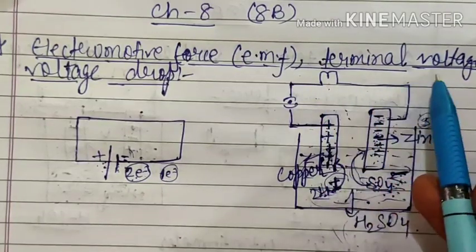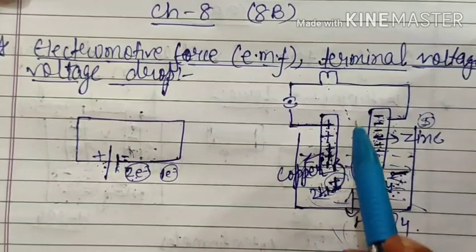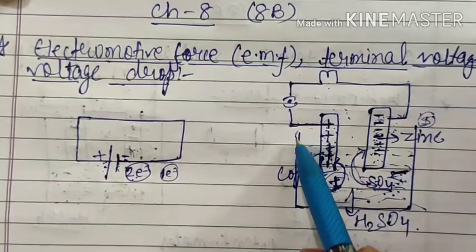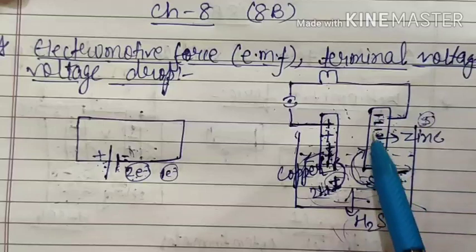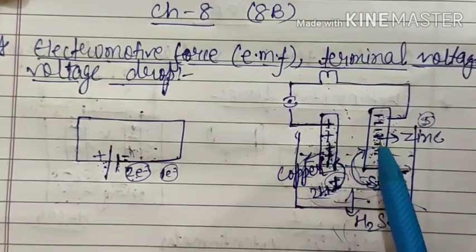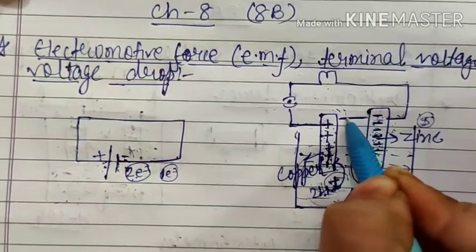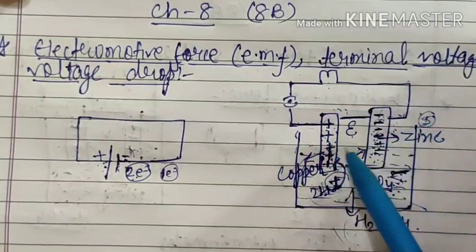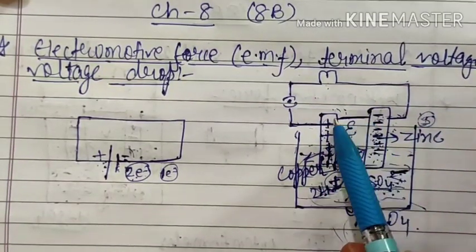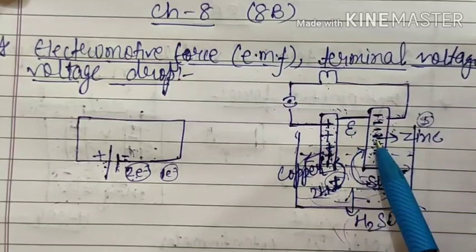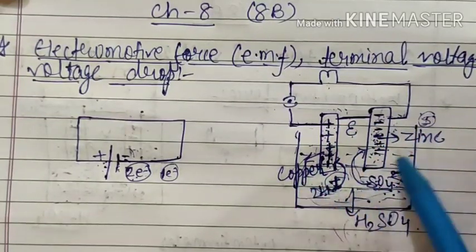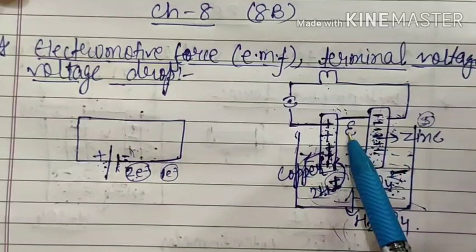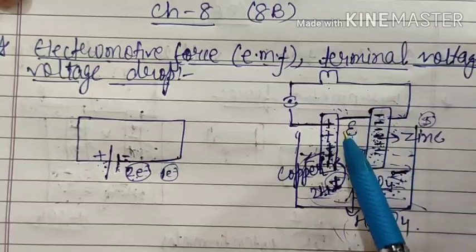Now forget the external circuit. We have constructed two terminals with a potential difference between them. This potential difference between the two terminals is known as EMF, denoted by epsilon, which stands for electromotive force. In an open circuit — when the external circuit is not connected — the potential difference between the terminals or electrodes of a cell is known as EMF.